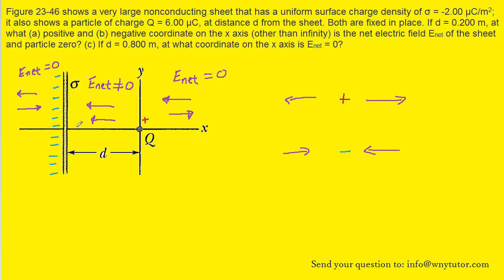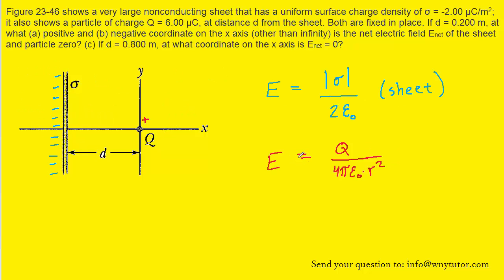Now that we have those ideas in mind, we are going to actually calculate a specific location at which the net electric field equals zero. To do that, we review the electric field produced by a sheet of charge and the electric field produced by a point charge. These equations are presented in this chapter or perhaps an earlier chapter. The sheet equation comes from Gauss's law, and the other equation gives the electric field produced by a point charge. We want these two electric field magnitudes to be equal to each other, so we set the magnitude of the electric field produced by the sheet equal to that produced by the charged particle.